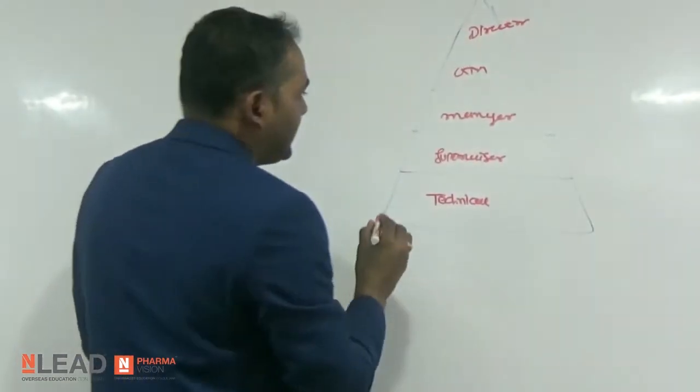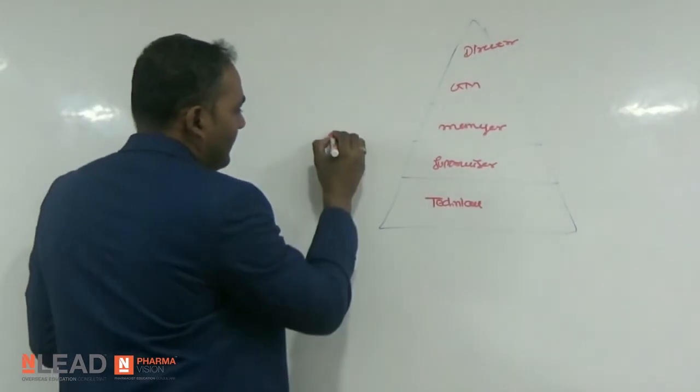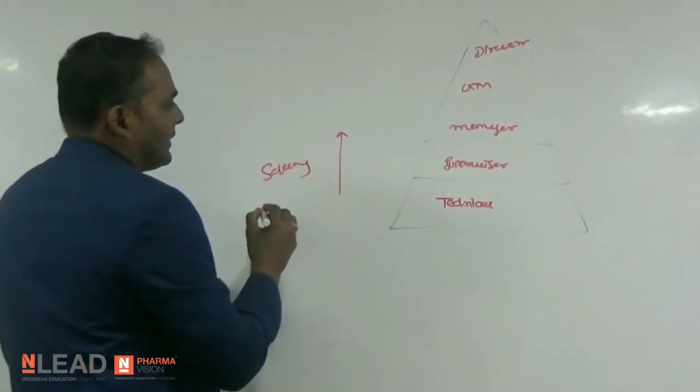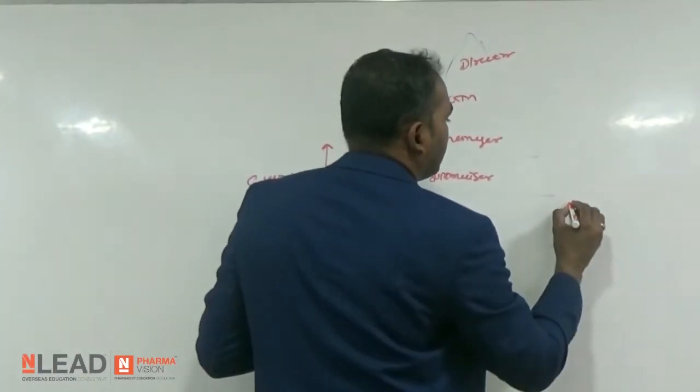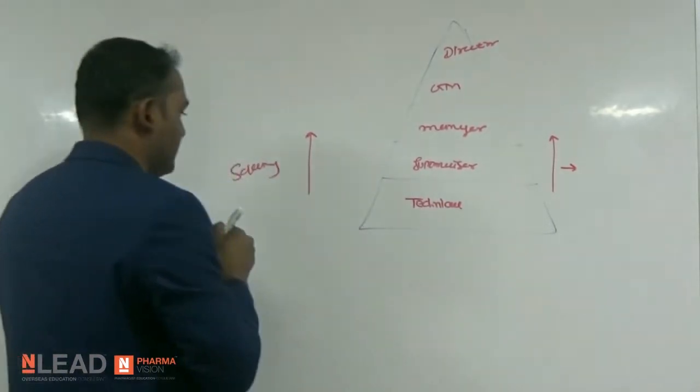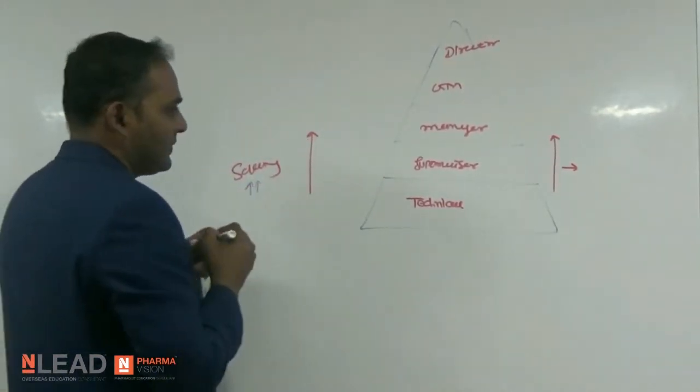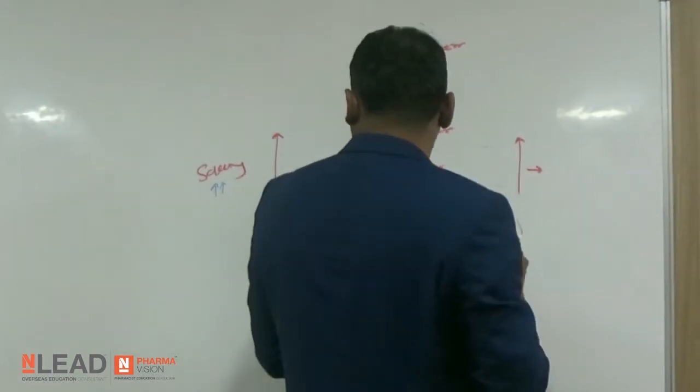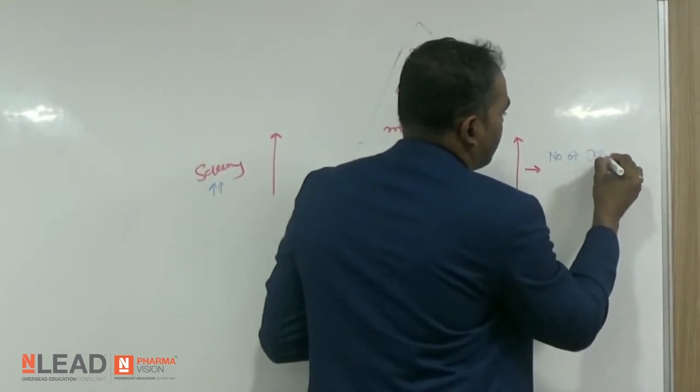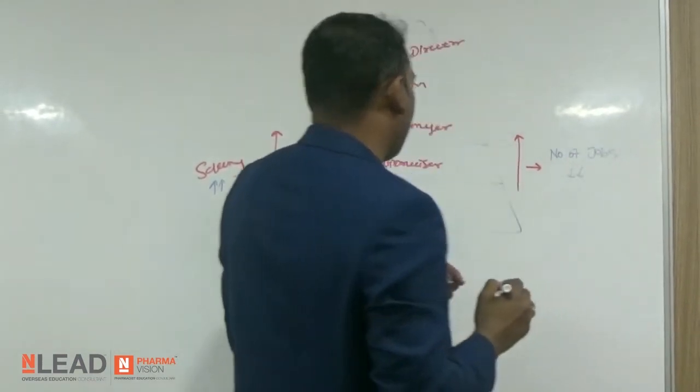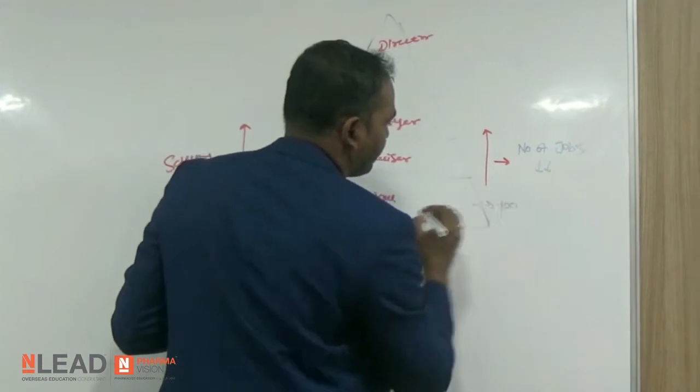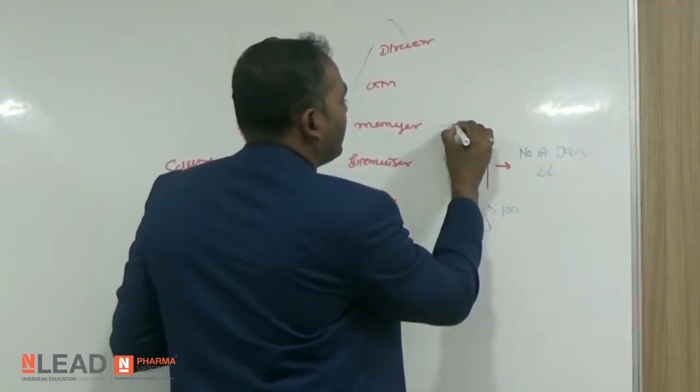As we move up the pyramid, salary increases. But as we move up, the number of jobs decreases. For example, if there are a hundred jobs at the base, there will be ten here, then two at the next level.